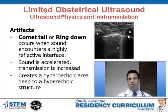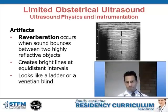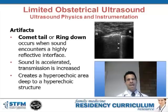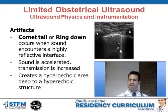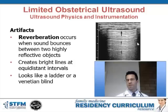In comet tail or ring down artifact, we again have a highly reflective surface. Because of that highly reflective surface, there is an acceleration of the velocity of sound at that interface, and that acceleration causes a hyperechoic streak — what's called a comet tail or ring down artifact.